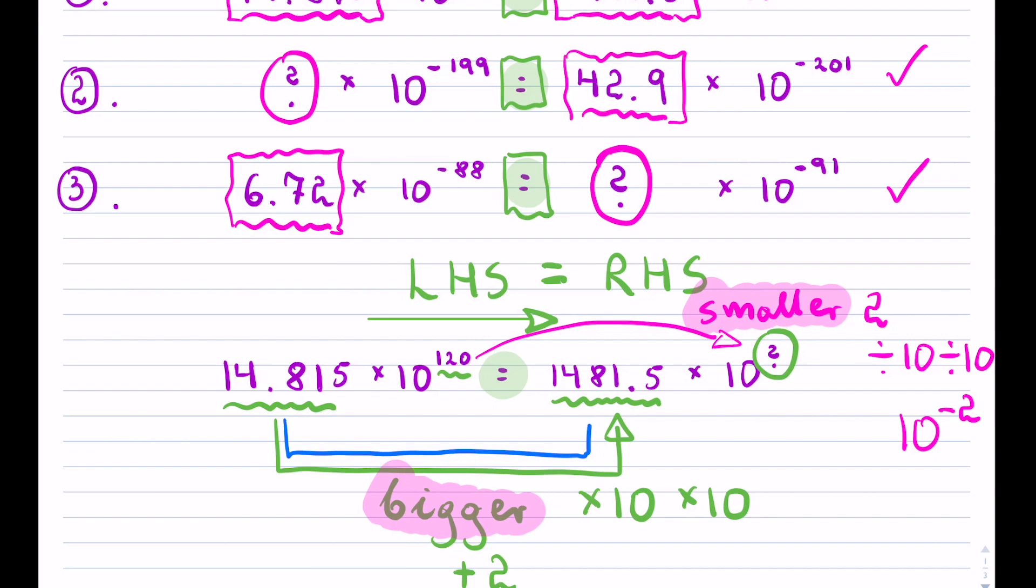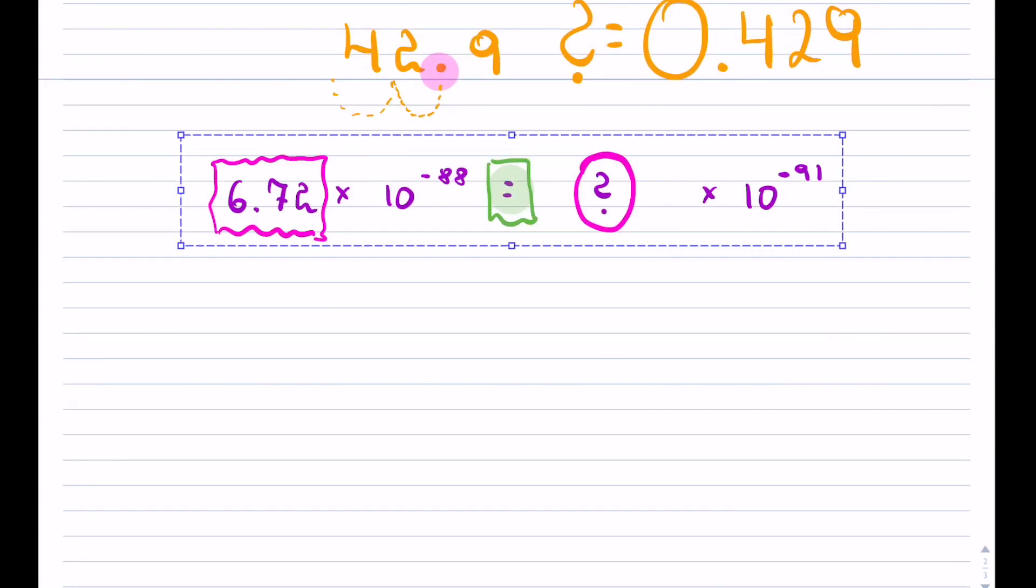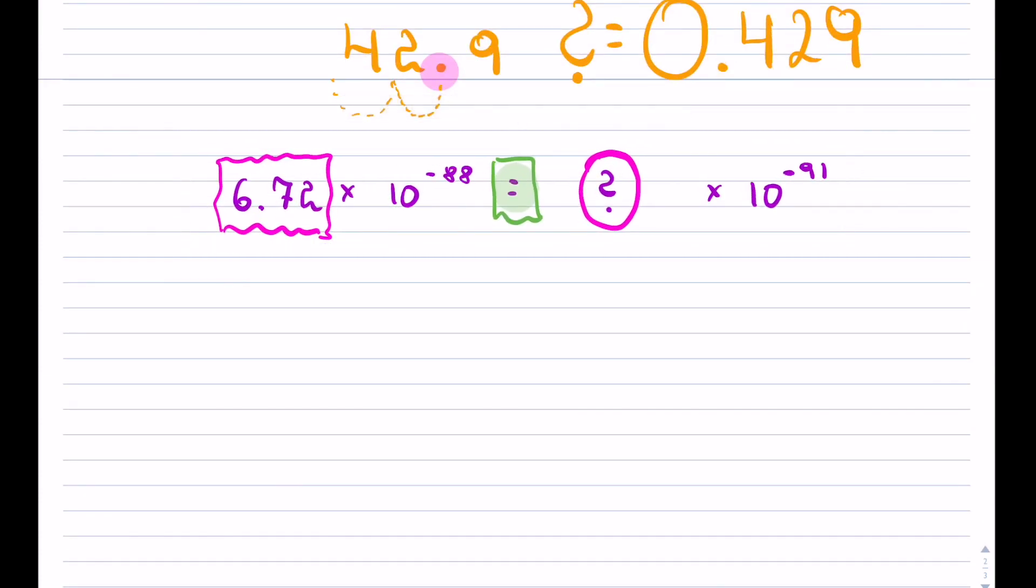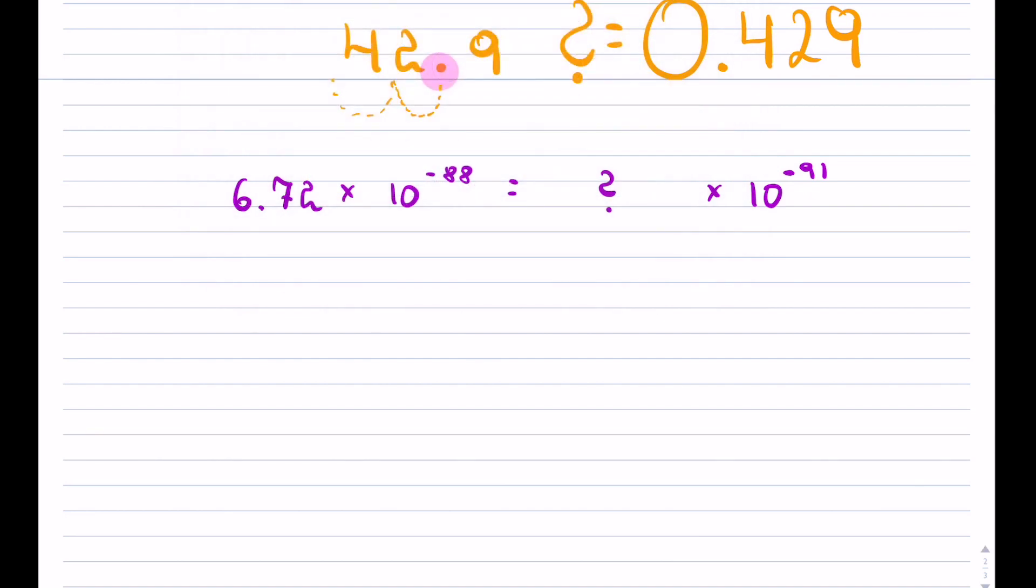Let's try it for a third example. Now my question mark is on the right-hand side. I know everything on the left-hand side. So I will be going in this direction. Always from what you know to what you don't know.